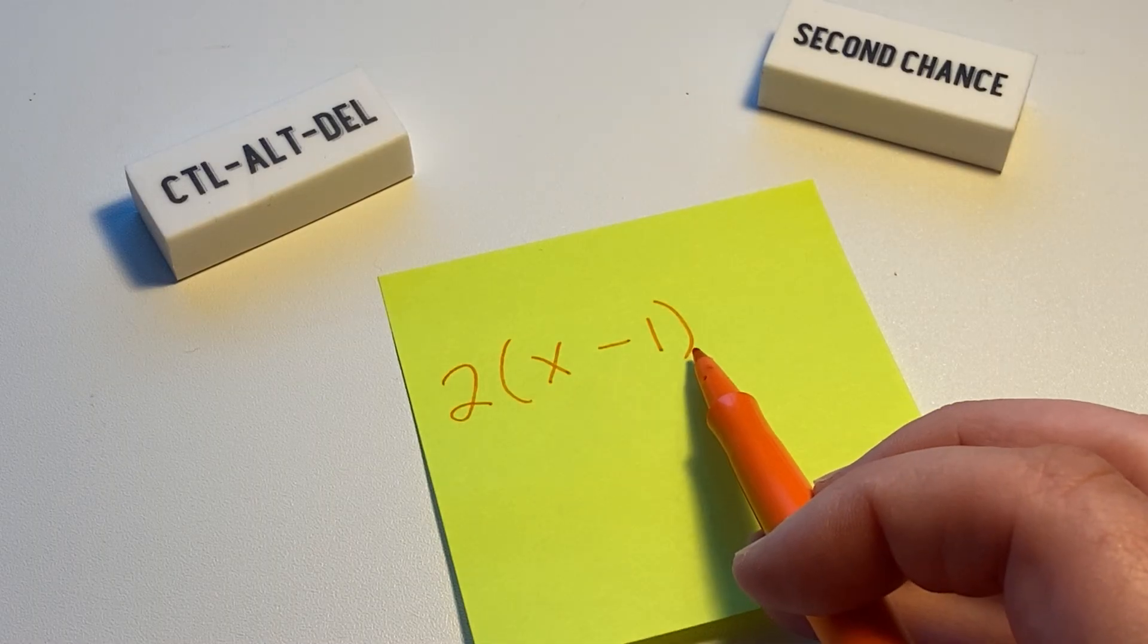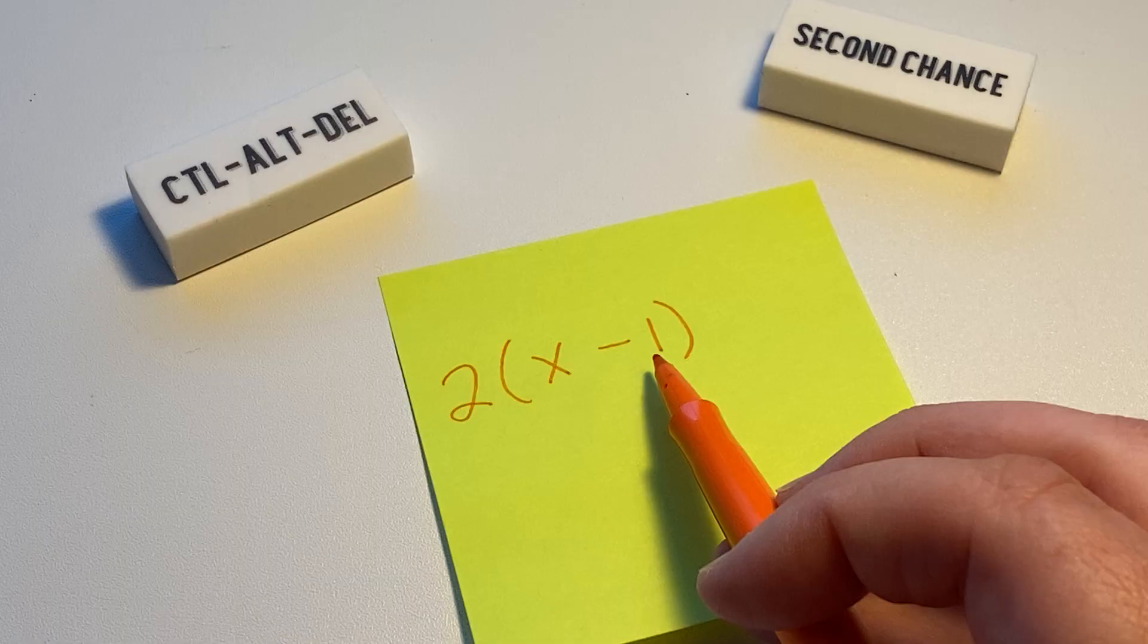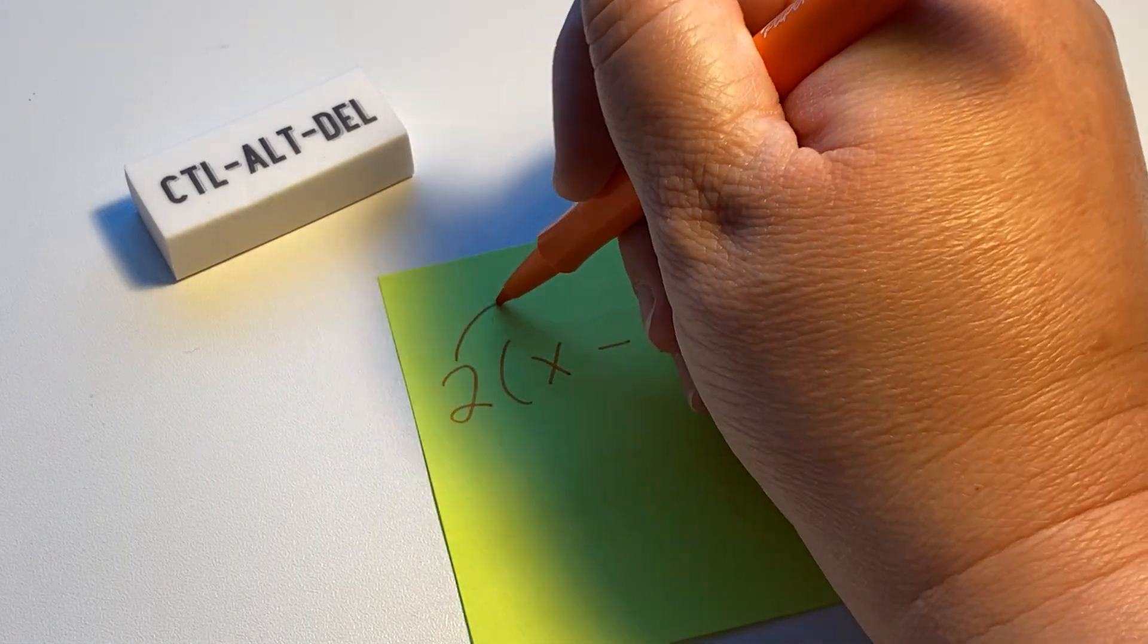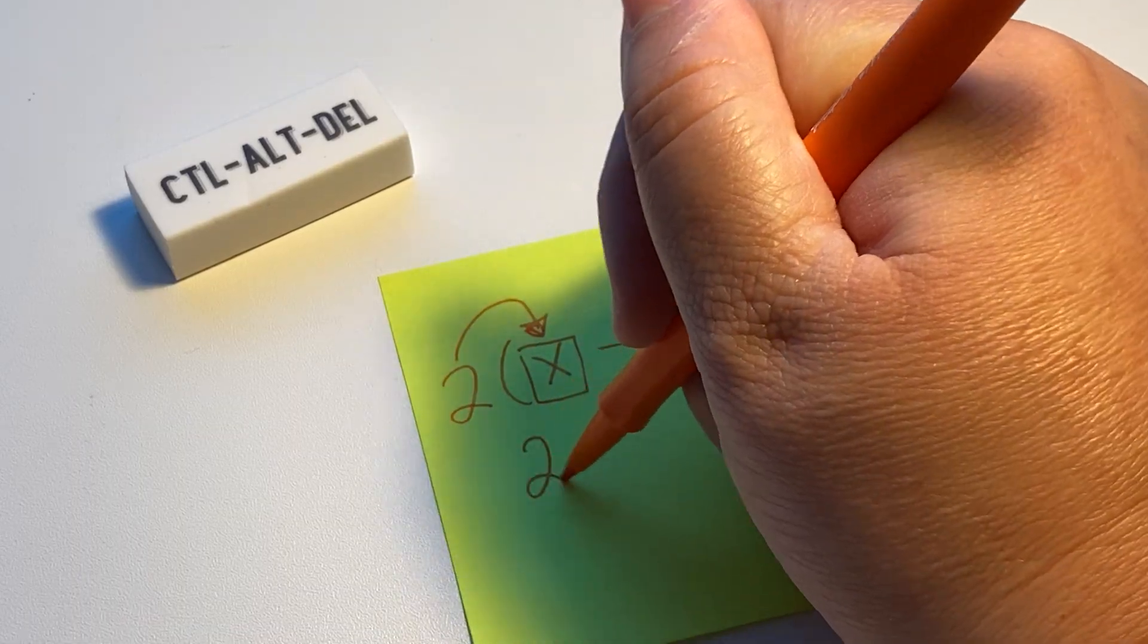So let's do 2(x-1). That literally means we have two of whatever is inside the parentheses, so we have two x minus ones. We have two x's and we have two negative ones or two minus ones.